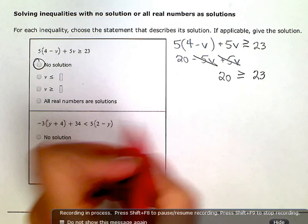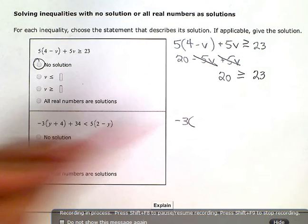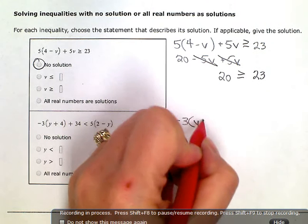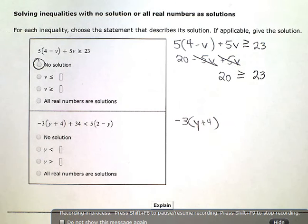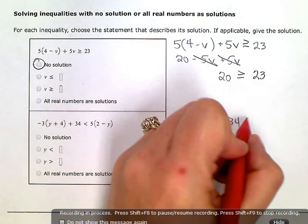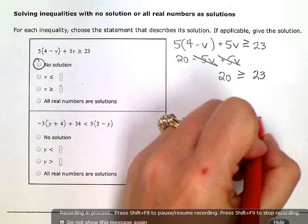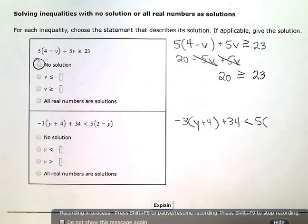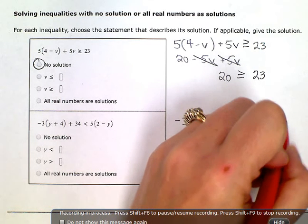On this next one, again, let me rewrite the inequality. Negative 3 times the quantity y plus 4 plus 34 is less than 5 times the quantity 2 minus y. Okay,